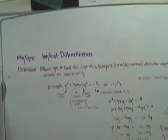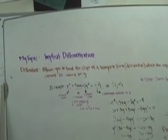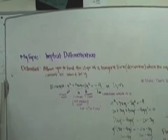This is implicit differentiation, and the definition is to allow you to find the slope of a tangent line, which is the derivative, when the equation in the question cannot be solved for y.